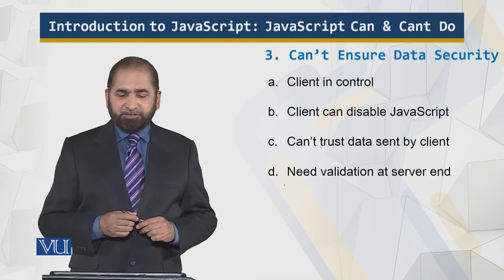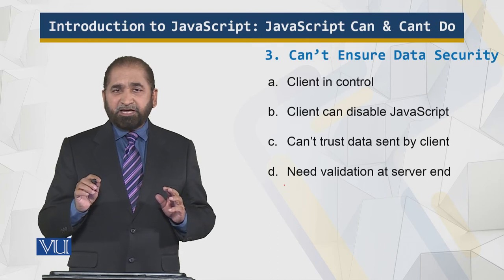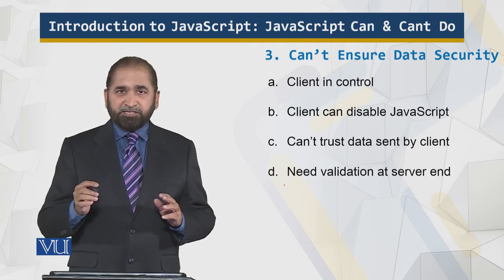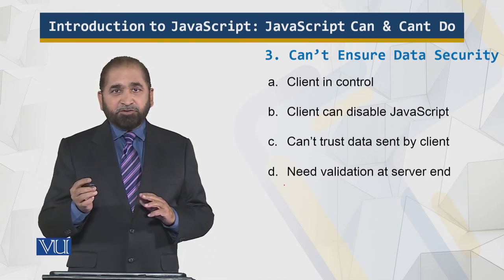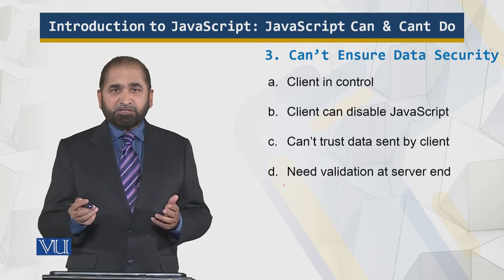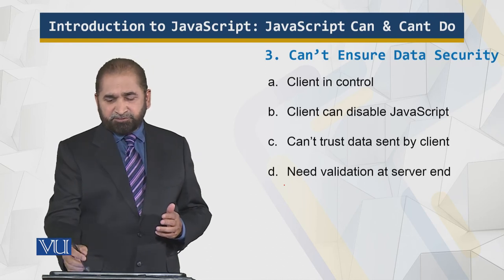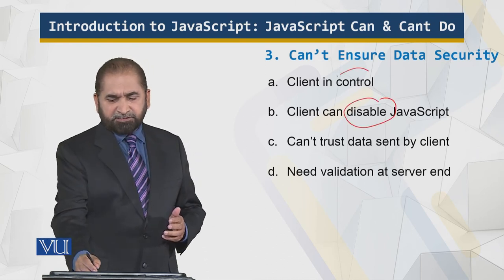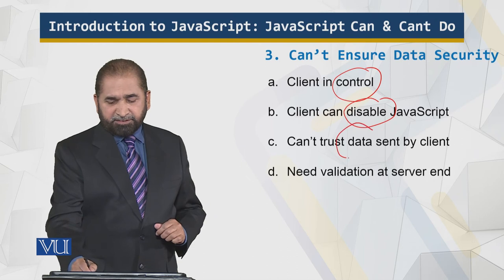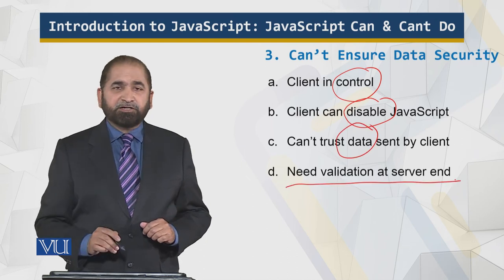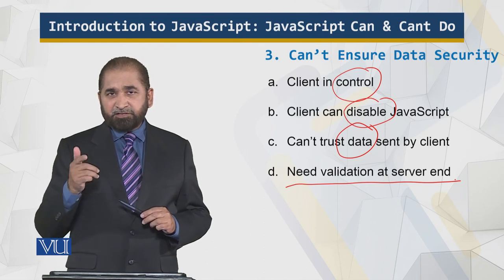JavaScript cannot ensure data security — the client is in control. It would be naive to believe that the data sent from the client is the same as intended, because the client may have disabled JavaScript and submitted garbage data. You cannot trust the data sent by the client, and therefore you need validation at the server end, because the client might be sending malicious data which could corrupt the server.